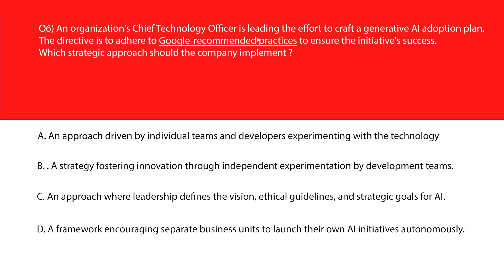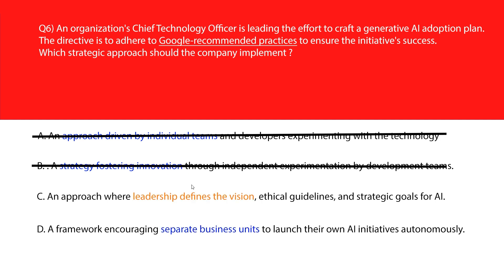Now let's look at this question about Google's recommended AI practices. Option A says an approach driven by individual teams and developers experimenting with the technology. This bottom-up approach can lead to fragmented efforts and misalignment with company goals — incorrect. Option B says a strategy fostering innovation through independent experimentation by development teams. Rapid implementation often neglects essential governance, risk, and ethical considerations — wrong answer.